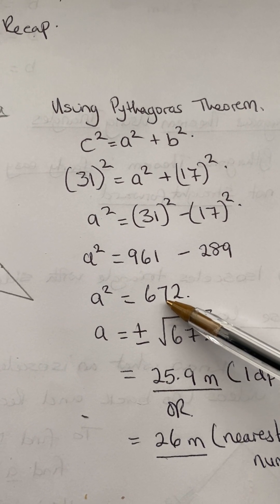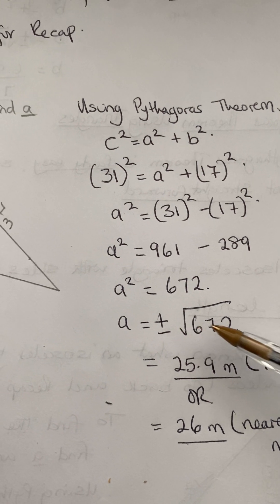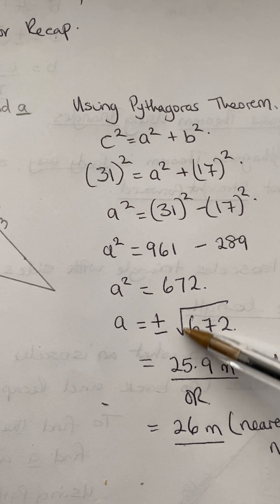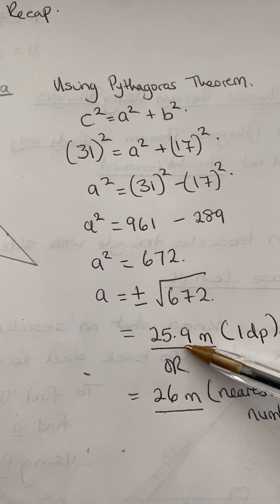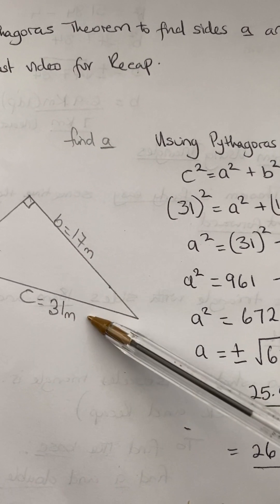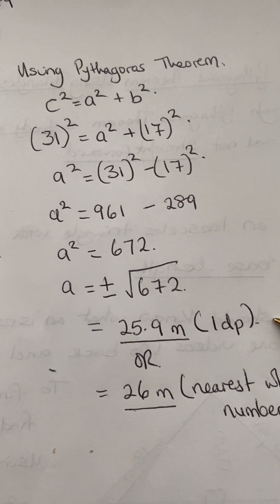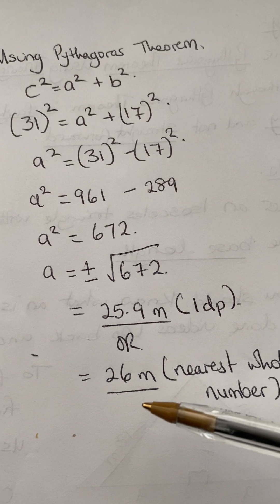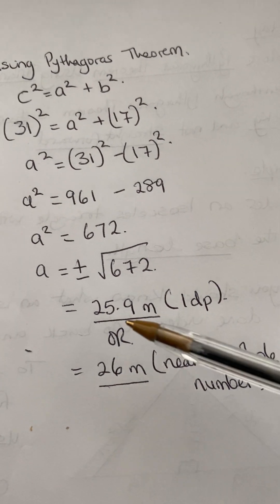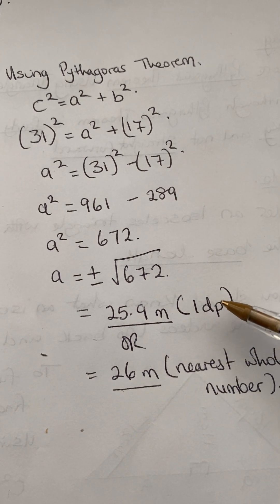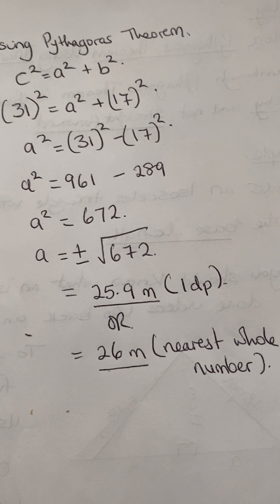A squared equals 672, so A will be plus or minus the square root of 672. A equals 25.9 meters — we choose the positive one because we want the length. That is to one decimal place, or 26 meters to the nearest whole number. Both are correct, but you should do what the question is asking.